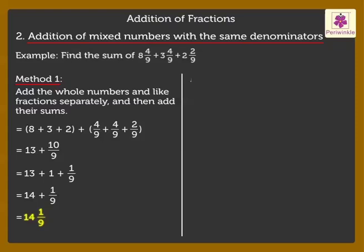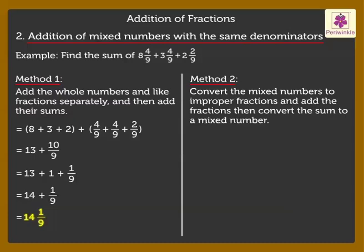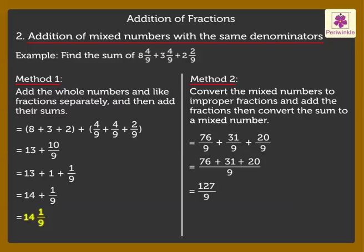Alternatively, in Method 2, convert the mixed numbers to improper fractions, add the fractions, then convert the sum to a mixed number. On converting to improper fractions, we get 76 upon 9 plus 31 upon 9 plus 20 upon 9, which equals 76 plus 31 plus 20 whole upon 9, which is equal to 127 upon 9. Finally, we convert it to a mixed number.